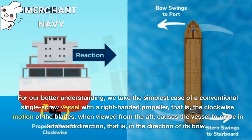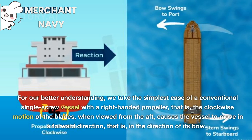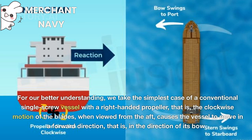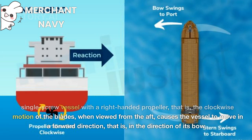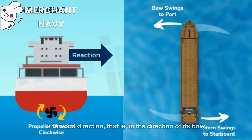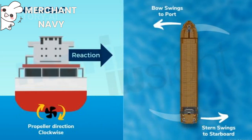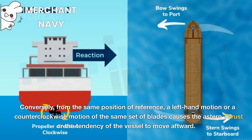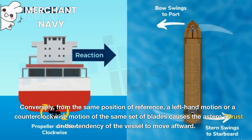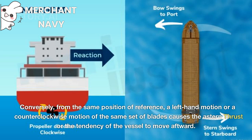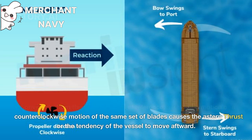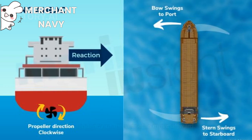For better understanding, we take the simplest case of a conventional single-screw vessel with a right-handed propeller — that is, the clockwise motion of the blades when viewed from the aft causes the vessel to move in a forward direction, that is, in the direction of its bow. Conversely, from the same position of reference, a counterclockwise motion of the same set of blades causes the astern thrust, or the tendency of the vessel to move afterward.